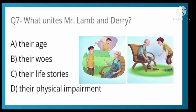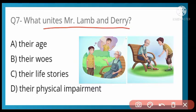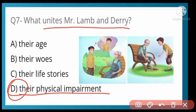What is the unity between Mr. Lamb and Derry? Options are: their age, their words, their life stories, or their physical empowerment. Option D is correct — their physical empowerment. Both share similar physical disabilities, which is what unites them.